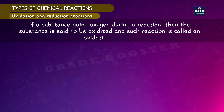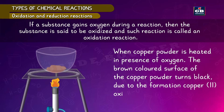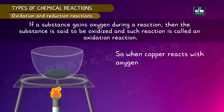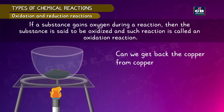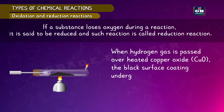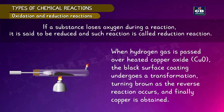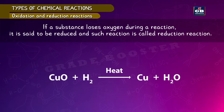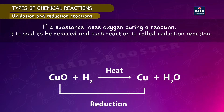If a substance gains oxygen during a reaction it is oxidized — this is an oxidation reaction. When copper powder is heated in the presence of oxygen, the brown surface turns black due to formation of copper oxide. Copper can be recovered from copper oxide by a reduction reaction. If a substance loses oxygen during a reaction it is reduced. When hydrogen gas is passed over heated copper oxide, the black surface turns brown and copper is obtained.